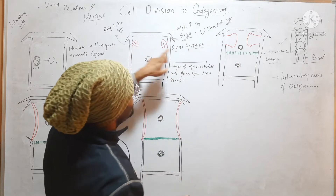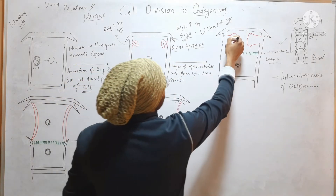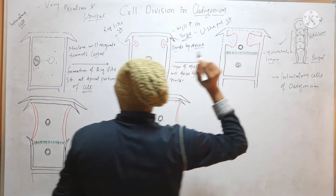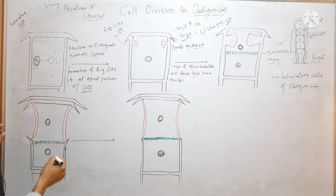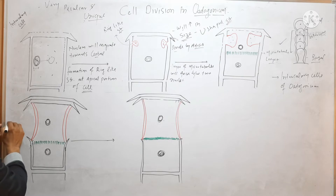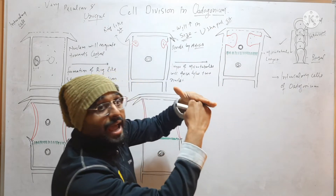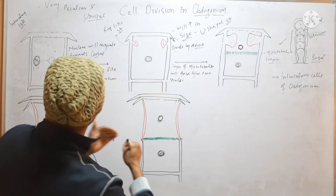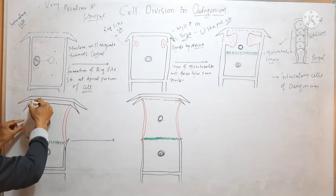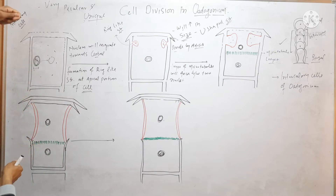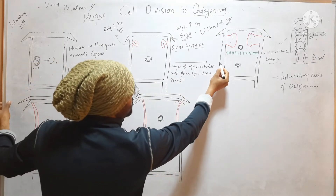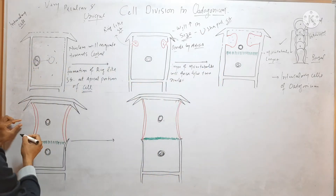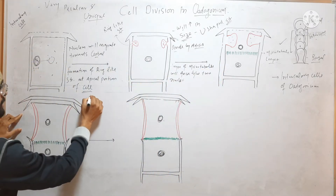The ring-like structures increase in size to form a U-shaped structure, then further elongate. When they elongate, they create pressure on the outer wall, and this outer wall will rupture.